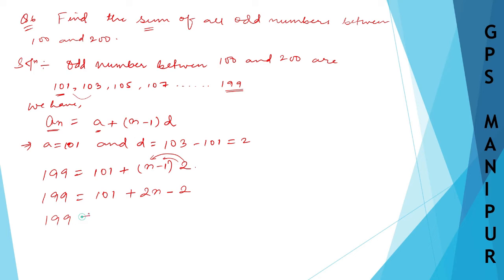So 199 equals 101 minus 2, it will be 99 plus 2n. Let me transfer this to this side: 199 minus 99 equals 2n. So I can write down 199 minus 99, it is 100, equals 2n.